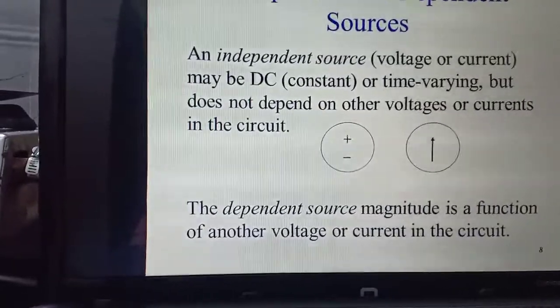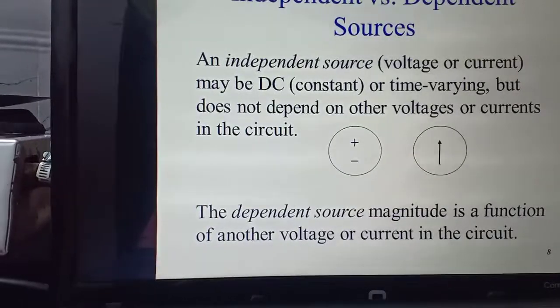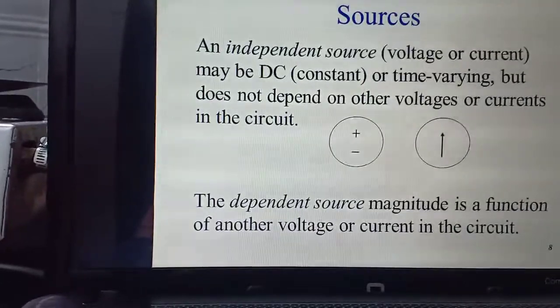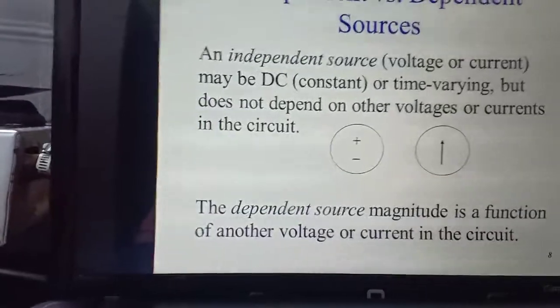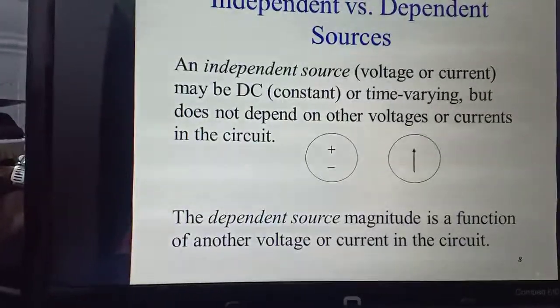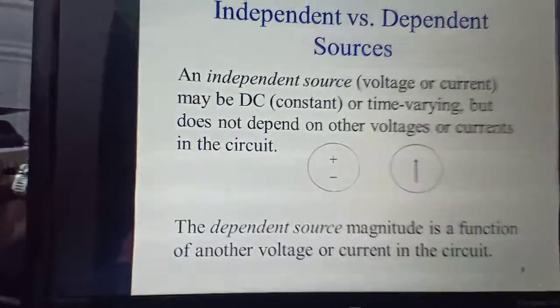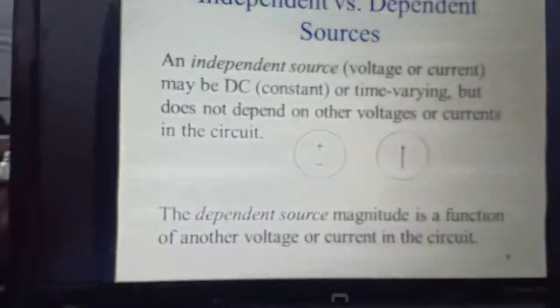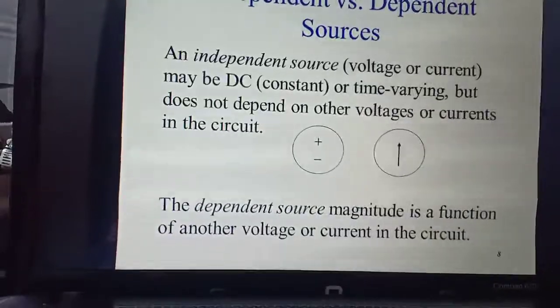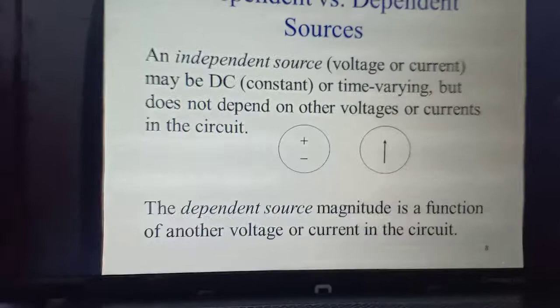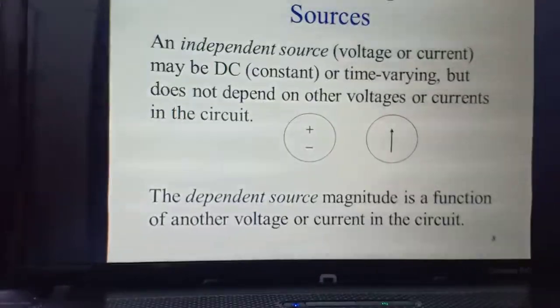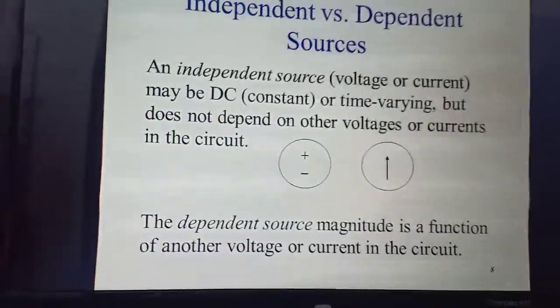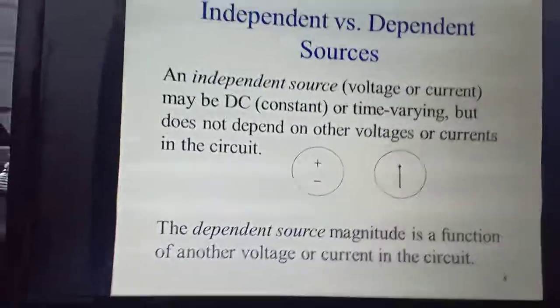Next are independent versus dependent sources. An independent source can be voltage or current source, may be DC or time varying. DC source will be constant. Time varying source will vary with time but does not depend on other voltages or currents in the circuit. It can be represented by two symbols: DC where constant voltage is defined with positive or negative terminals. Time varying is represented by an arrow where positive or negative are not defined.